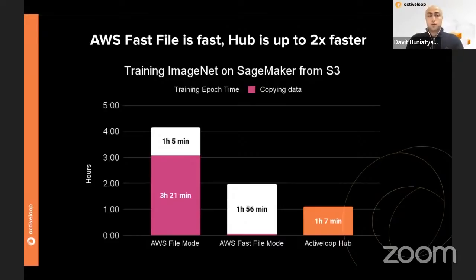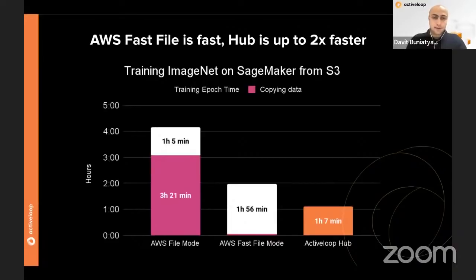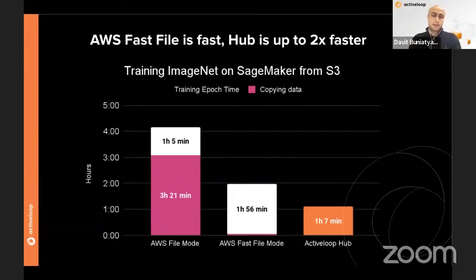One thing to mention: we can't bypass the laws of physics. If you're in New York and the dataset is in San Francisco, the time to physically move data is still bounded. This works very well when compute and the data center are physically nearby, but not necessarily on the same machine.